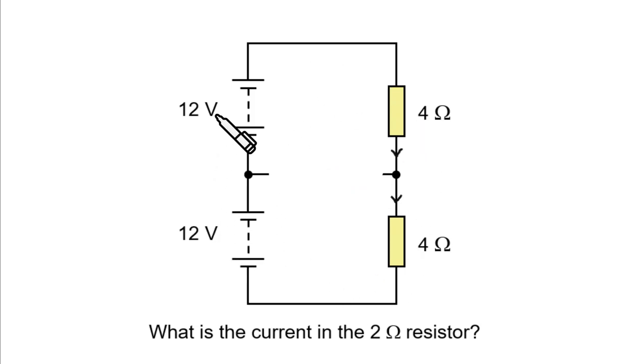So, we have 24 volts of EMF trying to push current through 8 ohm resistance. So, that's going to give us 3 amps here, 3 amps here.